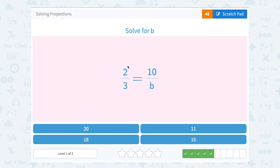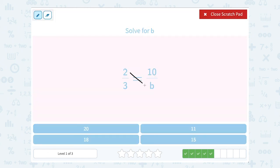Solve for b. 2 over 3 equals 10 over b. Let's cross multiply. 2 times b equals 2b. And 3 times 10 equals 30.